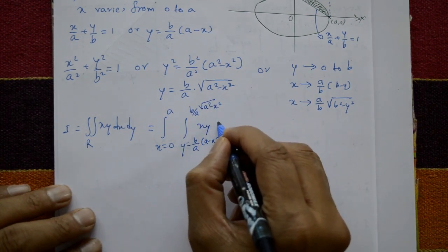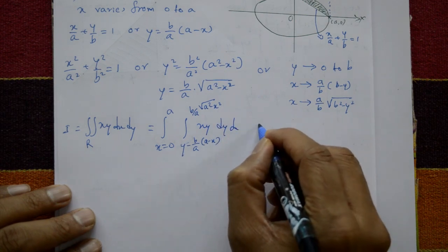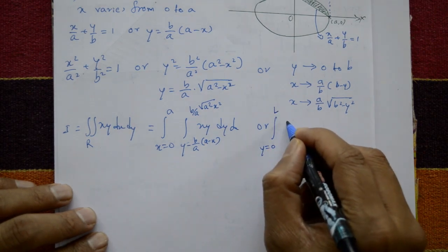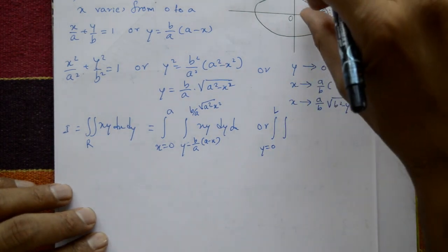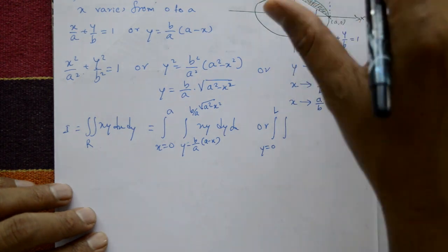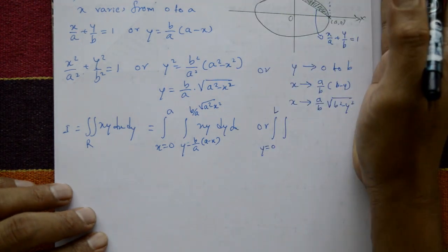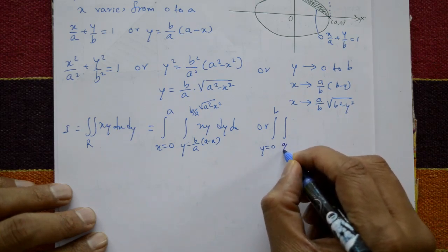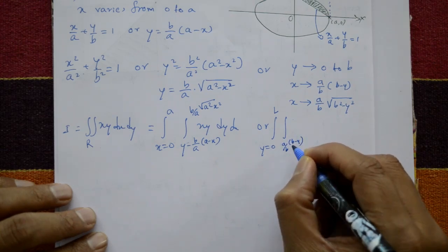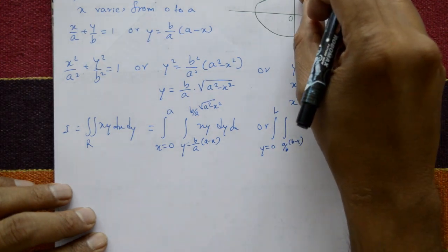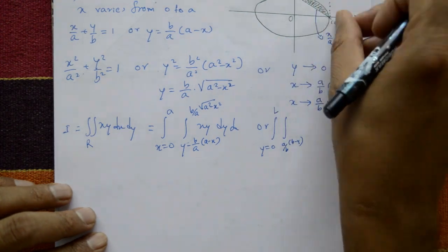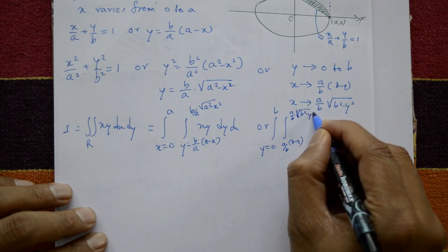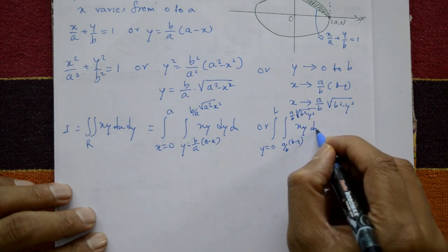Alternatively, changing the order to dx dy: I = ∫₀ᵇ ∫_{a/b·(b−y)}^{a/b·√(b²−y²)} xy dx dy, where y goes from 0 to b, the lower x-limit (straight line) is a/b·(b−y), and the upper x-limit (ellipse) is a/b·√(b²−y²).